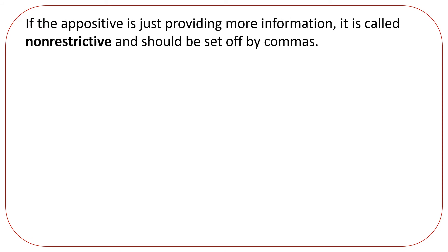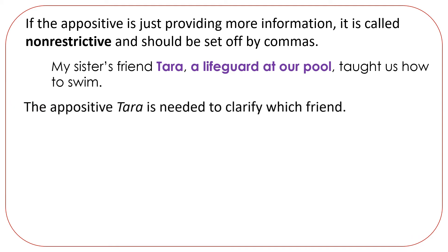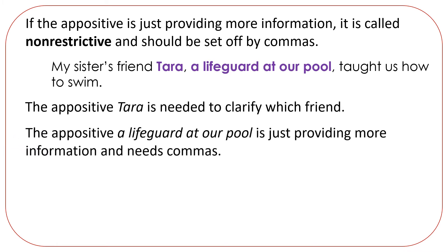If the appositive is just providing more information, it is called non-restrictive and it should be set off by commas. For example: 'My sister's friend Tara, a lifeguard at our pool, taught us how to swim.' This sentence has two appositives. The first, 'Tara,' is needed to clarify which friend. The appositive 'a lifeguard at our pool' is just providing more information and needs commas. The sentence would still be okay without it.